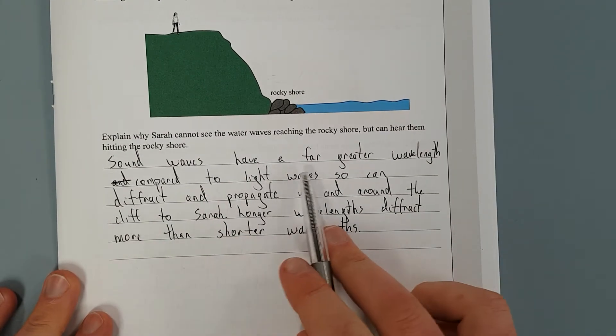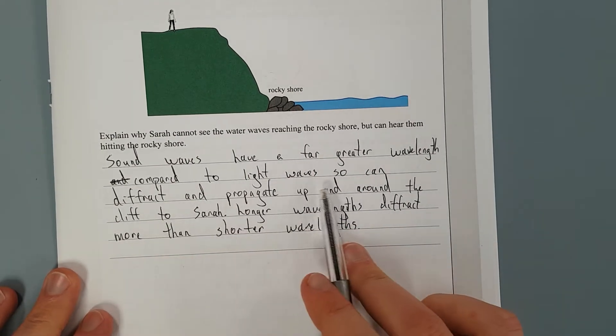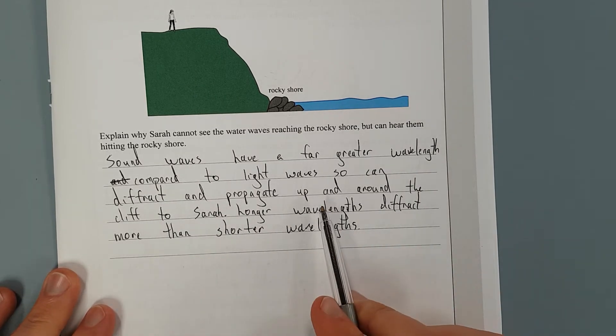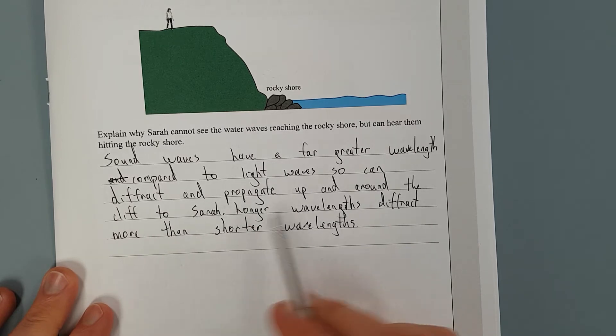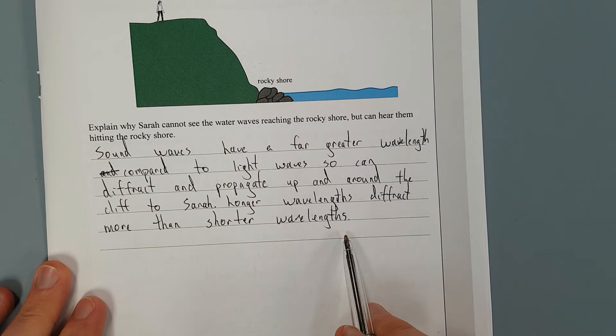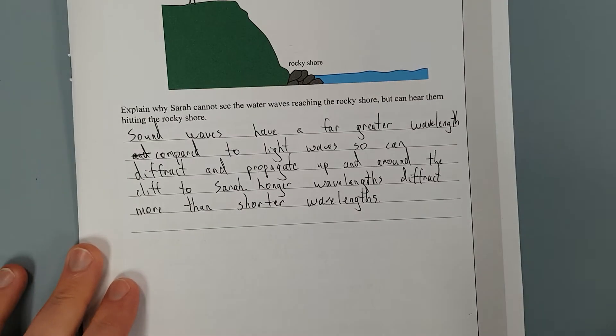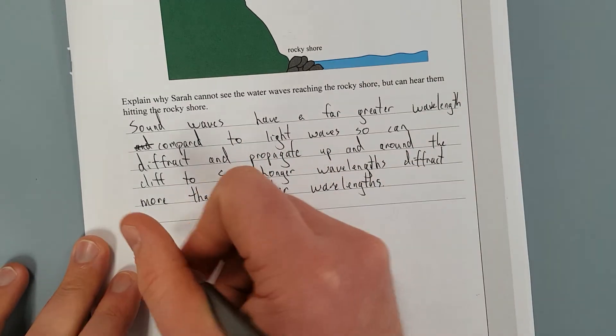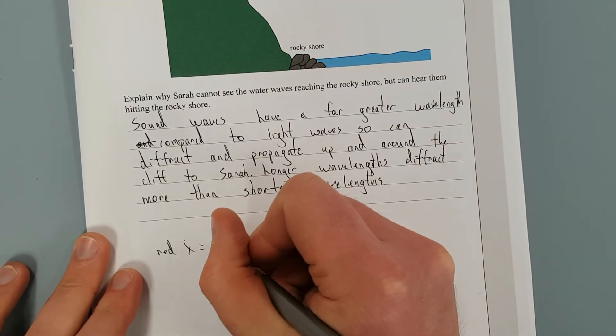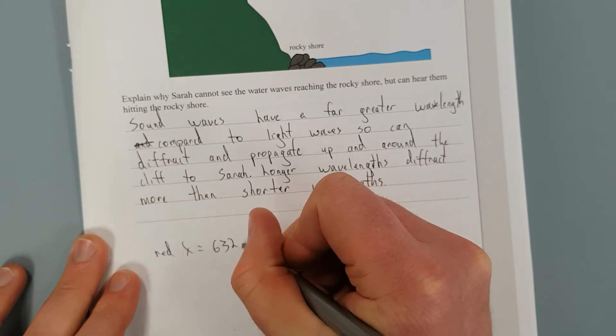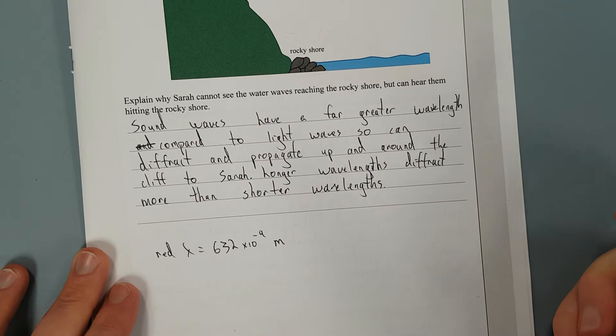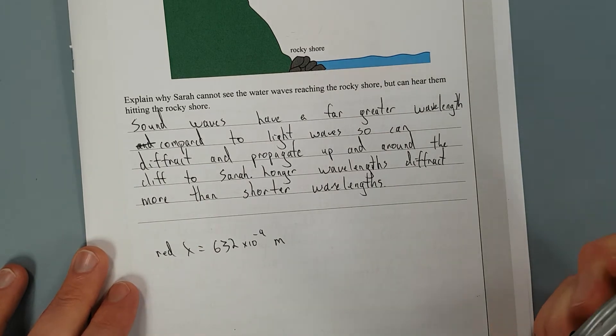I have said, sound waves have far greater wavelength compared to light waves, so can diffract and propagate up and around the cliff to Sarah. I put in a little bit of a caveat: longer wavelengths diffract more than shorter wavelengths. That's pretty much true. So light, red light, the red lambda is, what is it, 632 times 10 to the negative 9 metres.